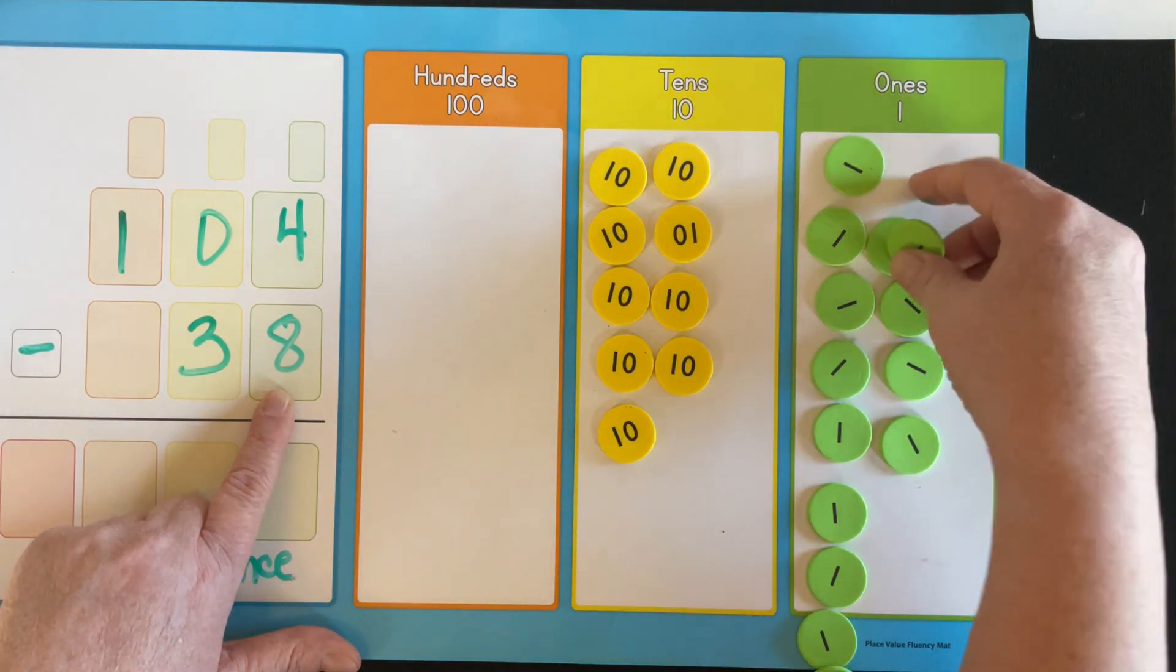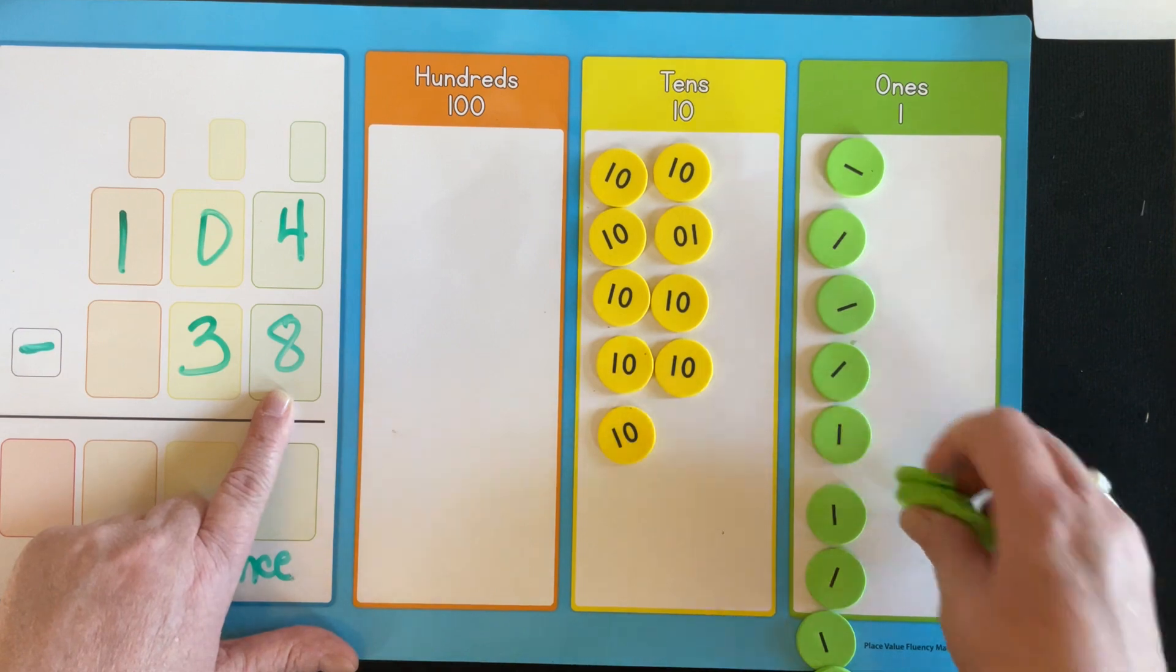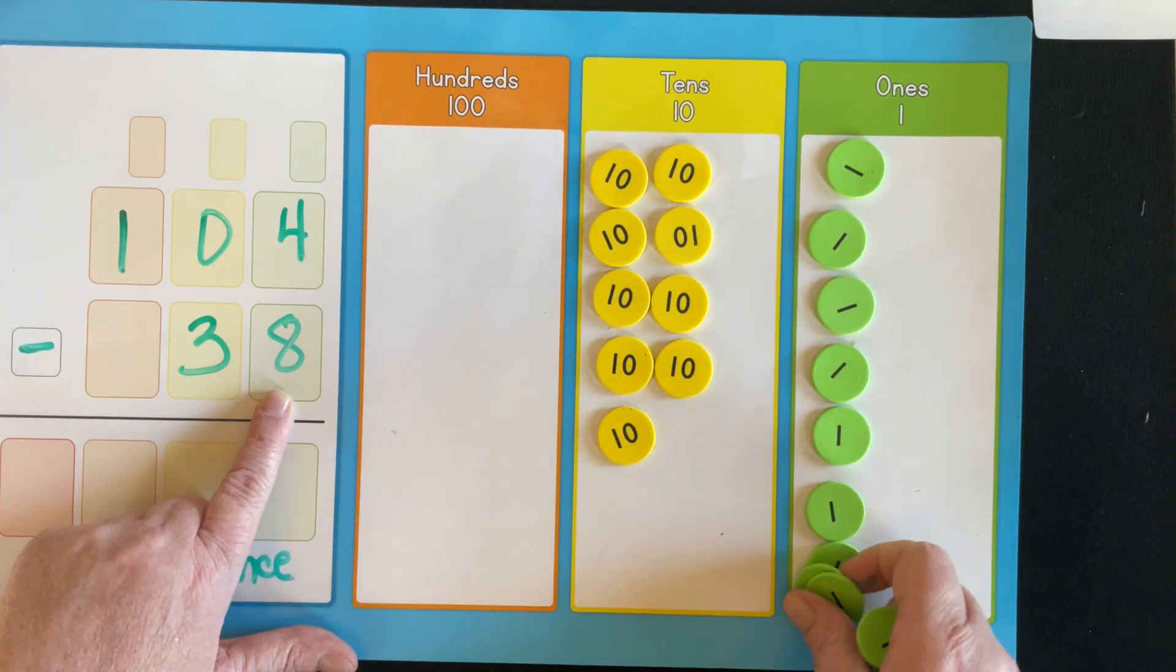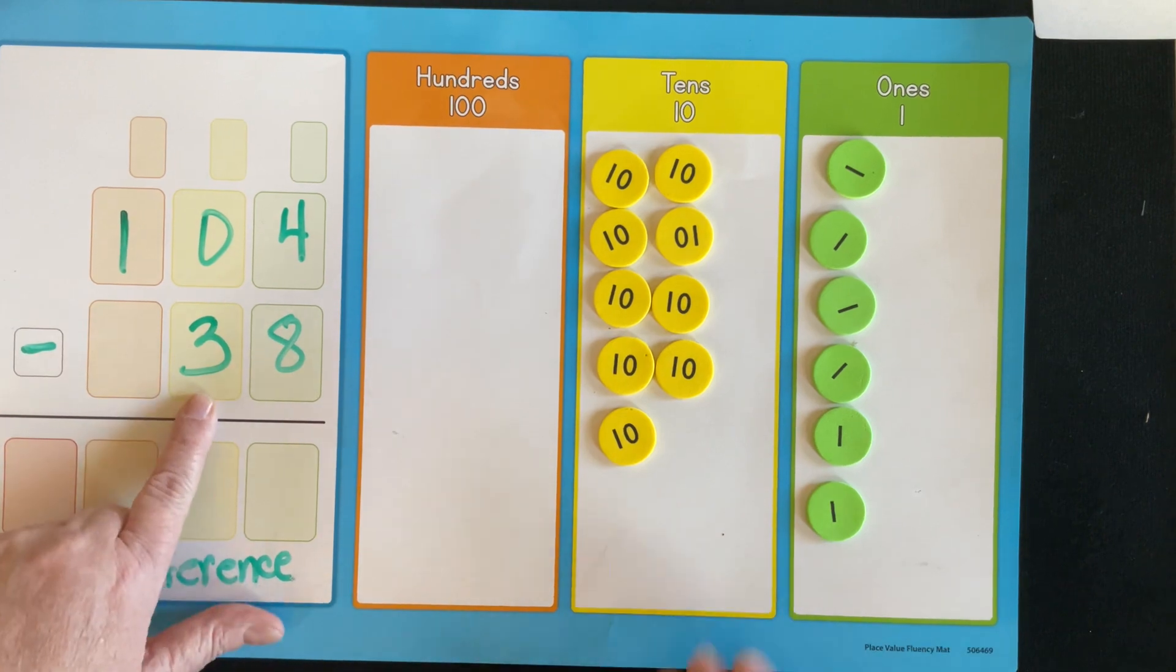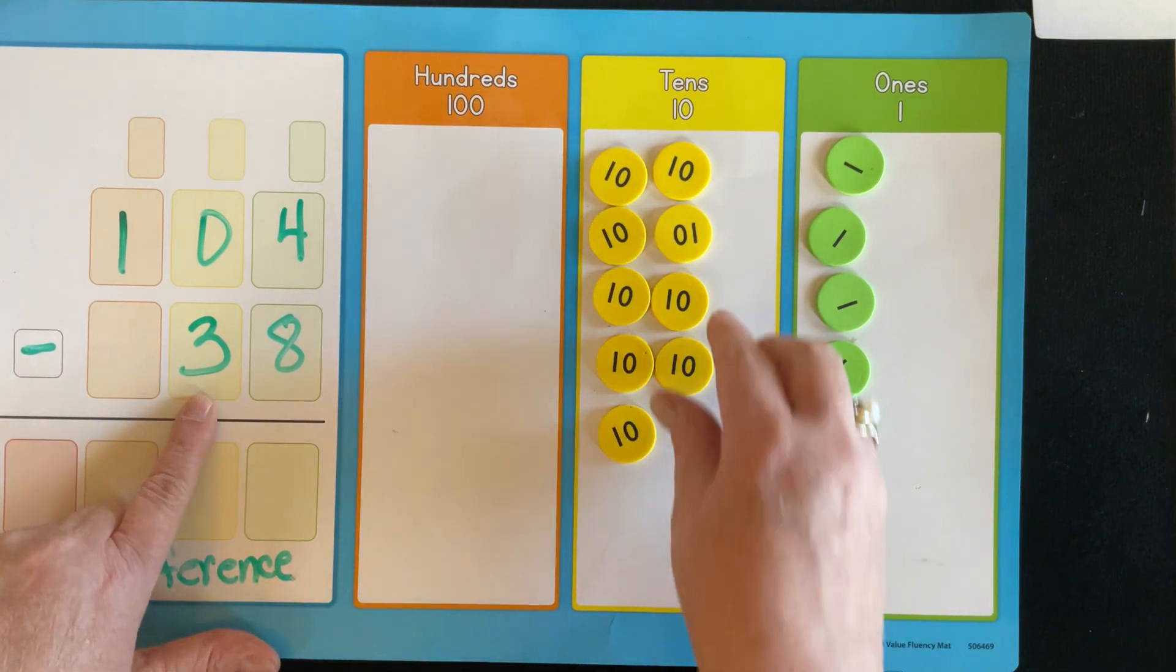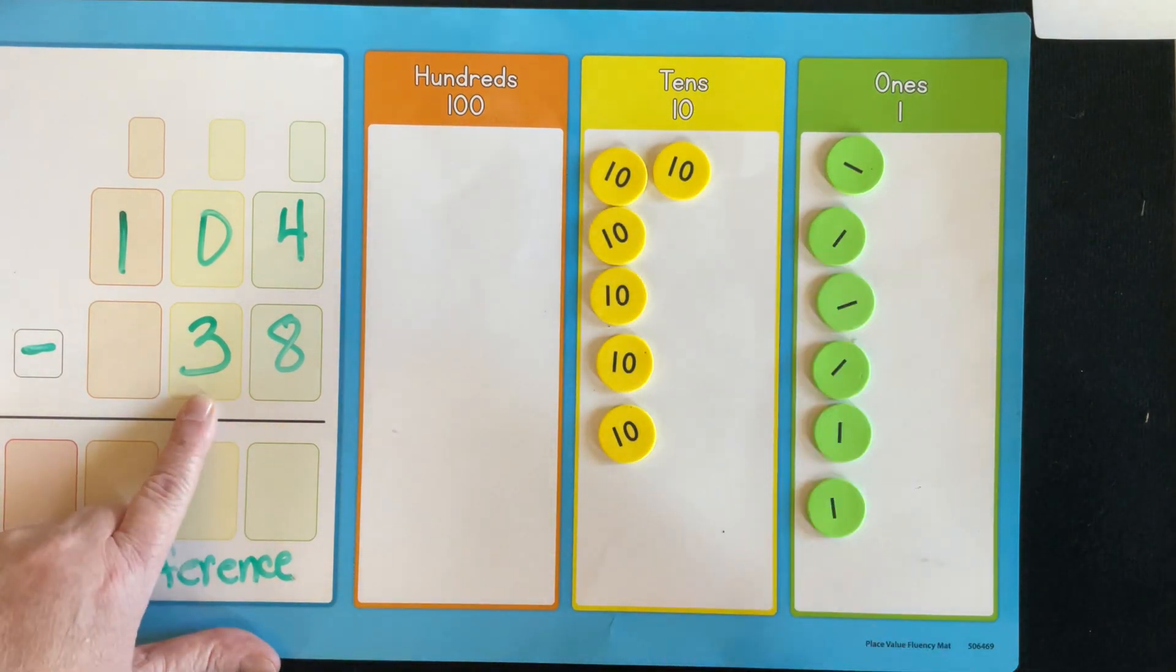Now can I remove eight? Yes. And you may have kids say, well, let's wipe out this five, six, seven, eight. So I did that. Now I have to take away three 10s. One, two, three, three 10s.